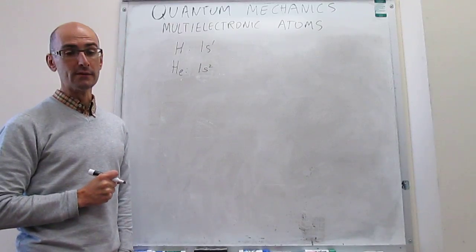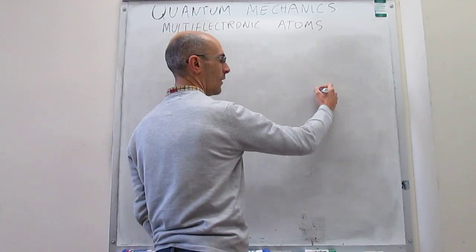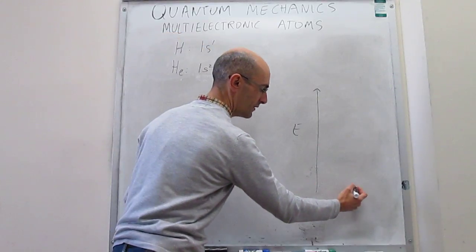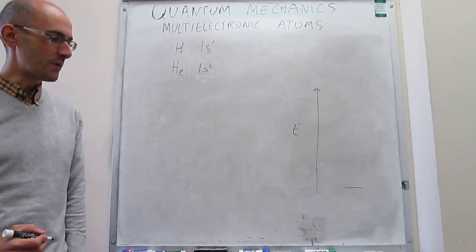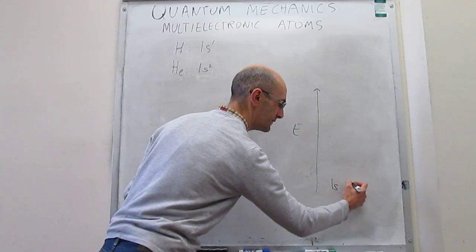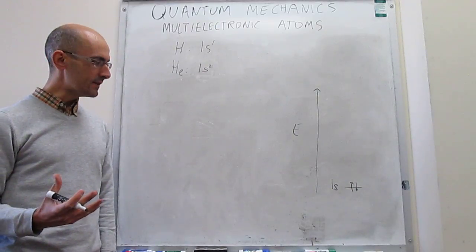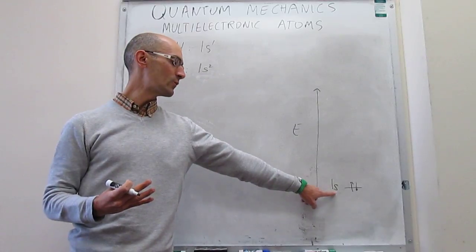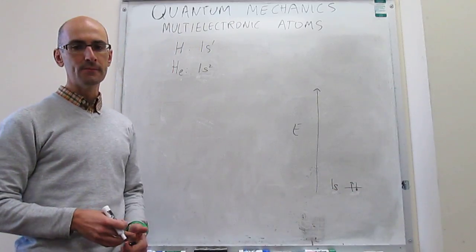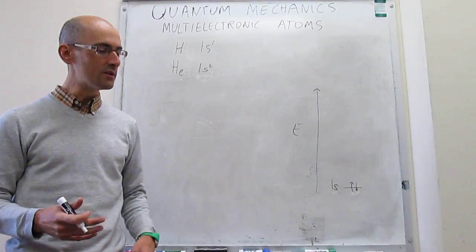The next element in the periodic table is the lithium atom, which has three electrons. To understand that, we have to think about what the energy of the wave functions available for that third electron are. If we plot all wave functions that are solutions to the Schrödinger equation, the lowest energy wave function is the 1s. The first two electrons in lithium have 1s wave functions with anti-parallel spins. The Pauli exclusion principle tells us the third electron cannot also have a 1s wave function, because no two electrons can have the same four quantum numbers. So the third electron is going to have a different wave function.